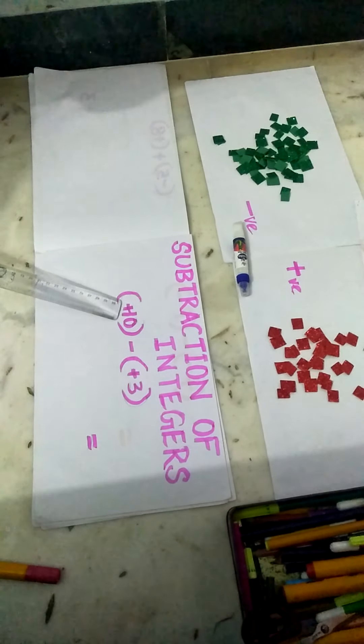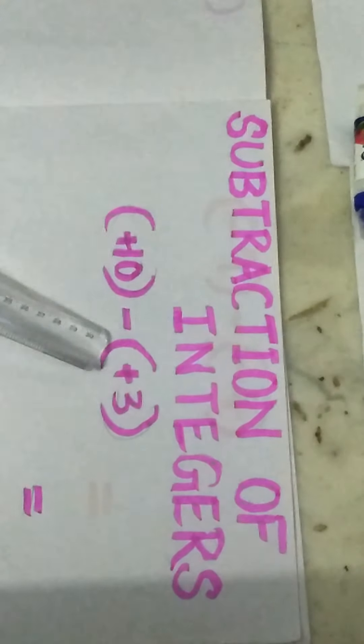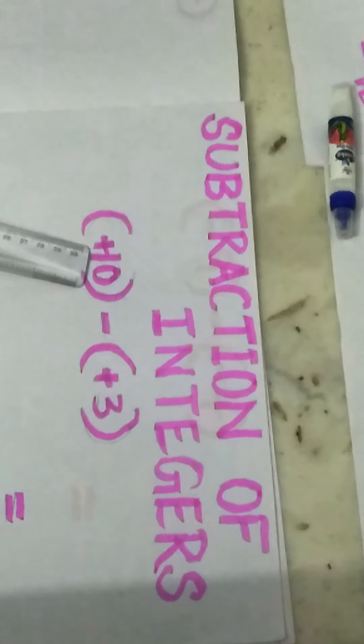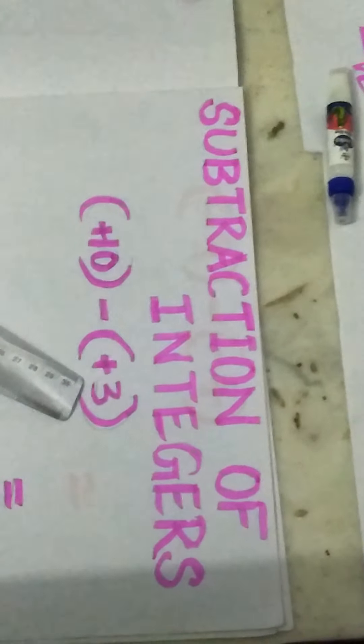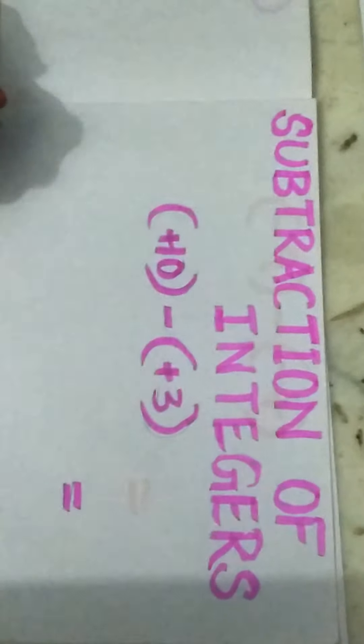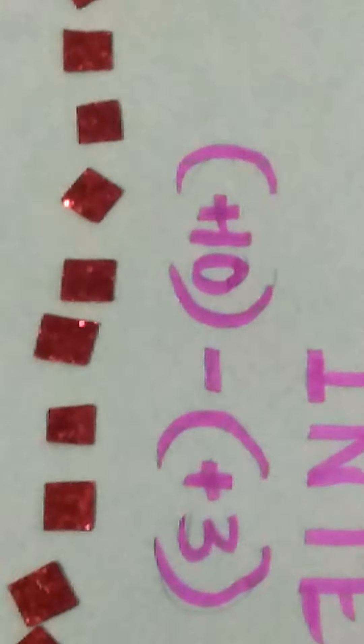So now the first question: positive 10 minus positive 3. That is, from 10 take away 3. From positive 10 we are going to take away positive 3. So let's take positive 10 counters — that is red colour. 1, 2, 3, 4, 5, 6, 7, 8, 9, 10. So here we have 10 positives.